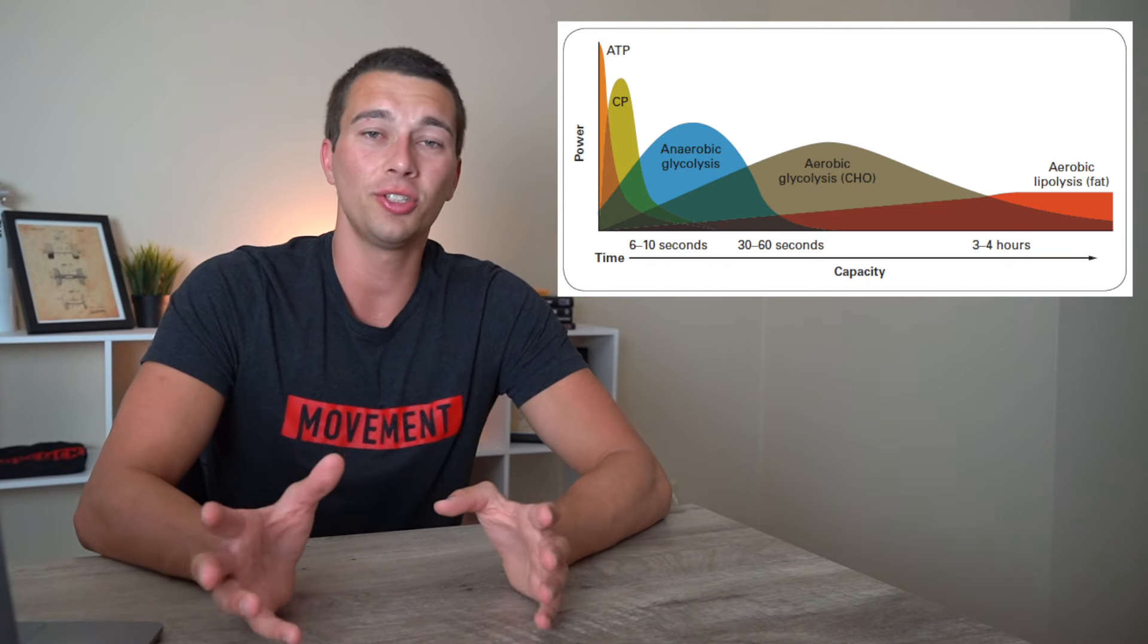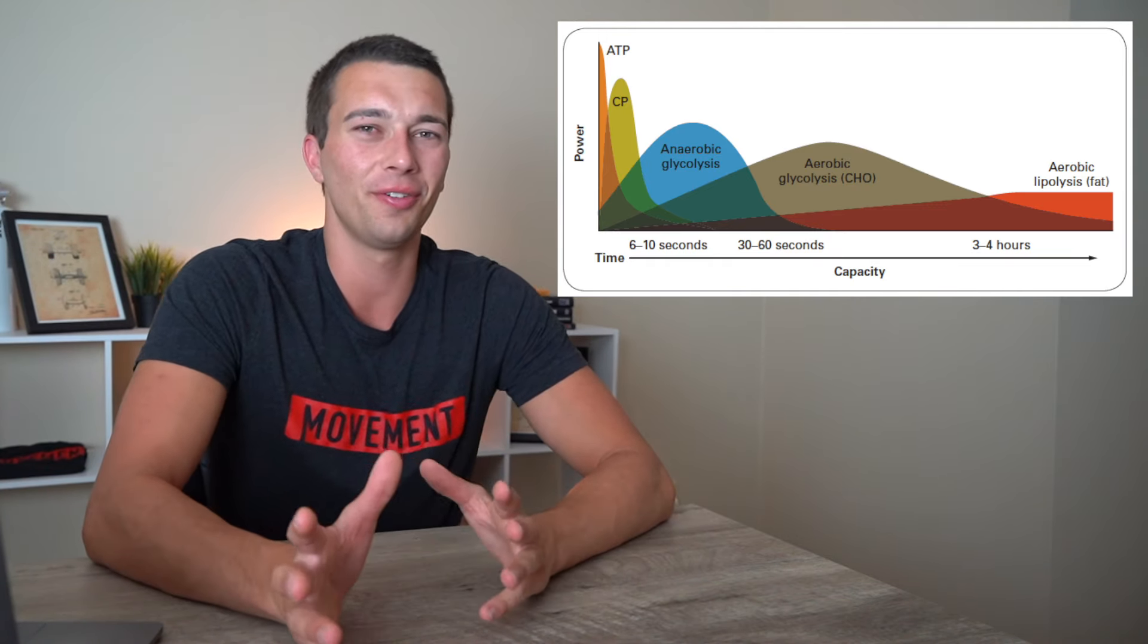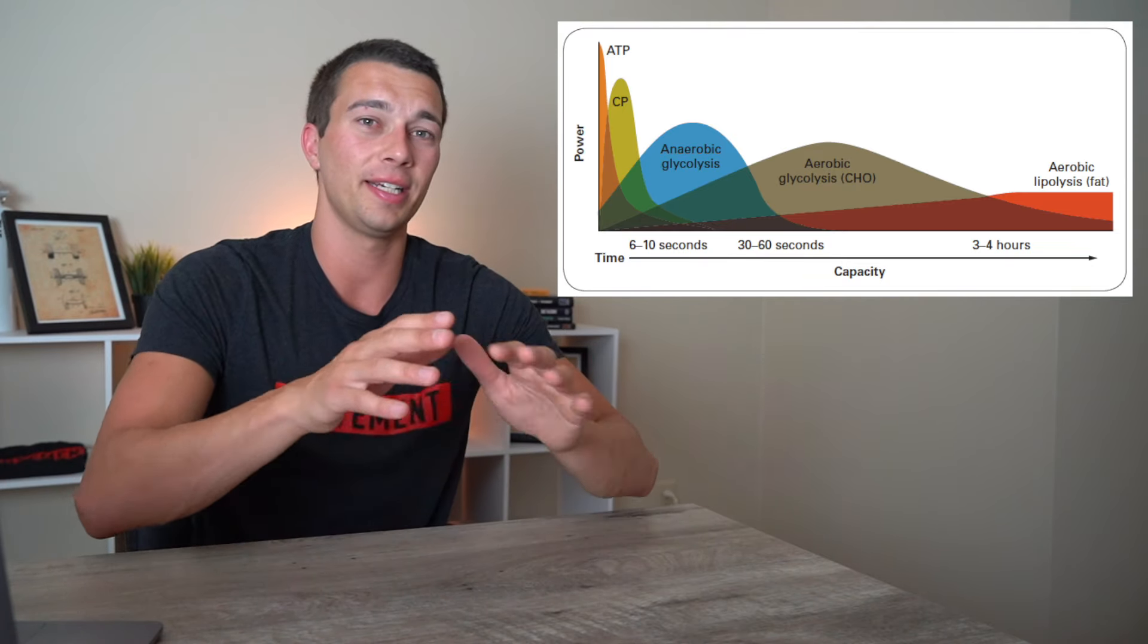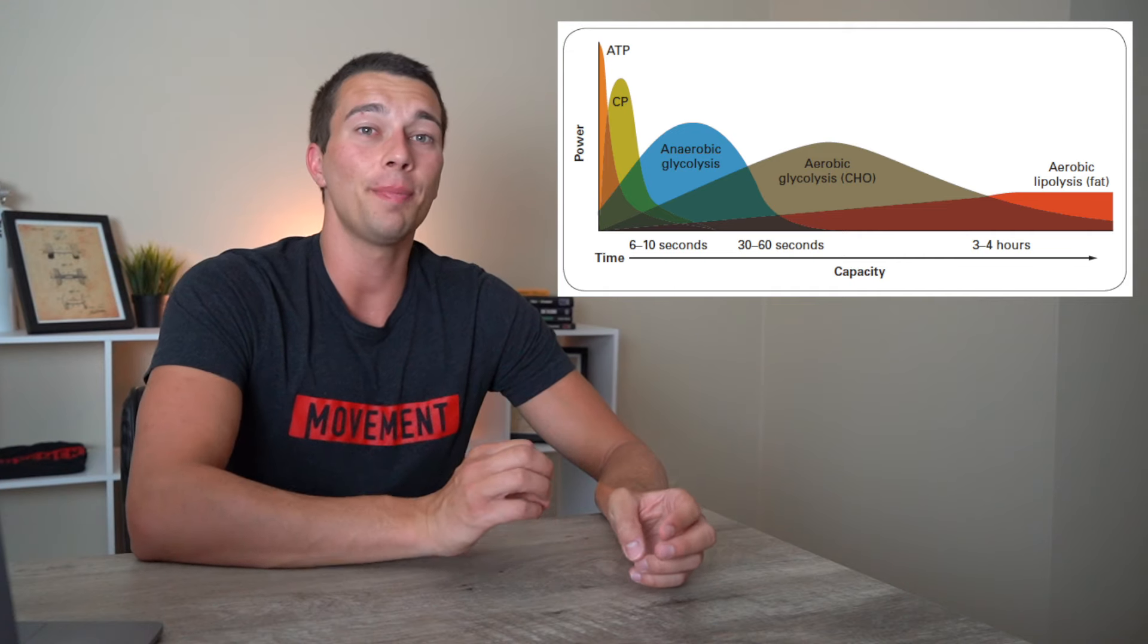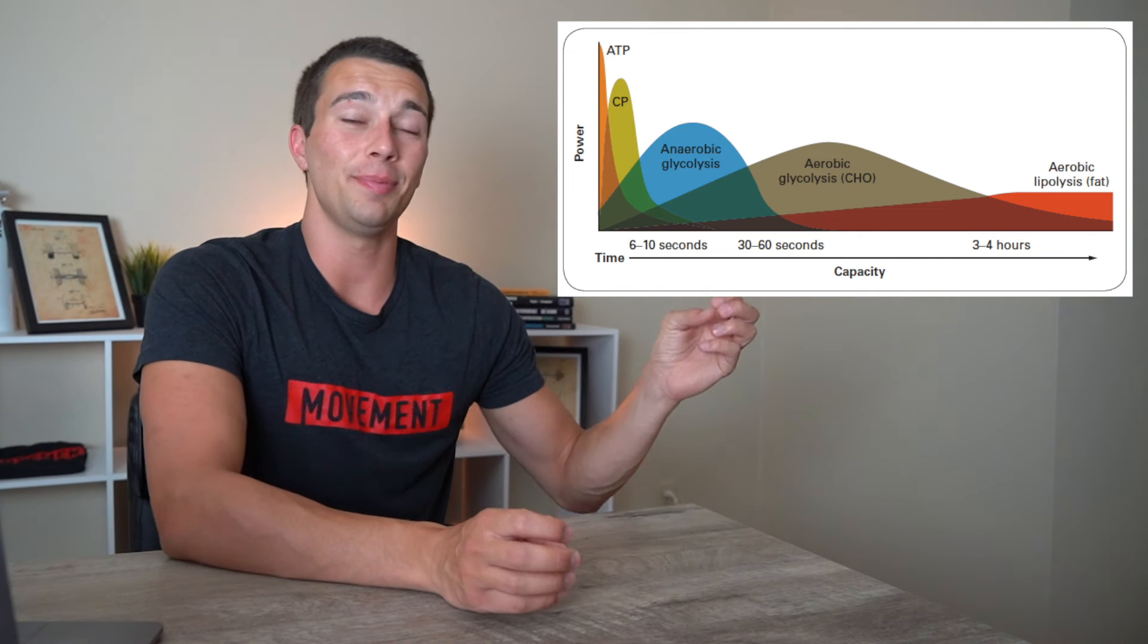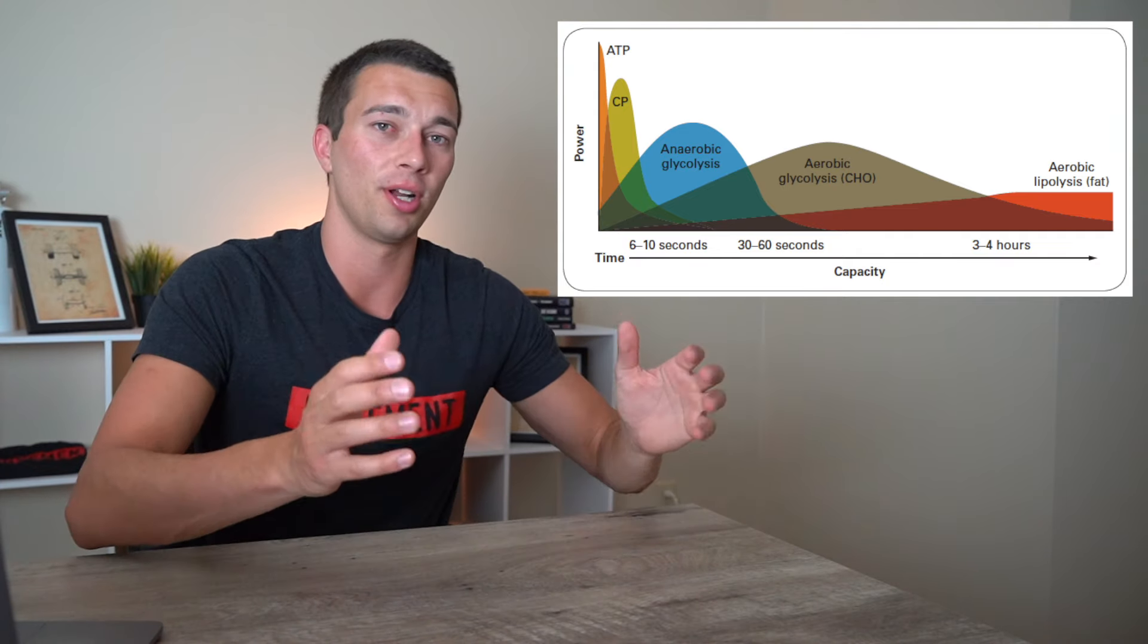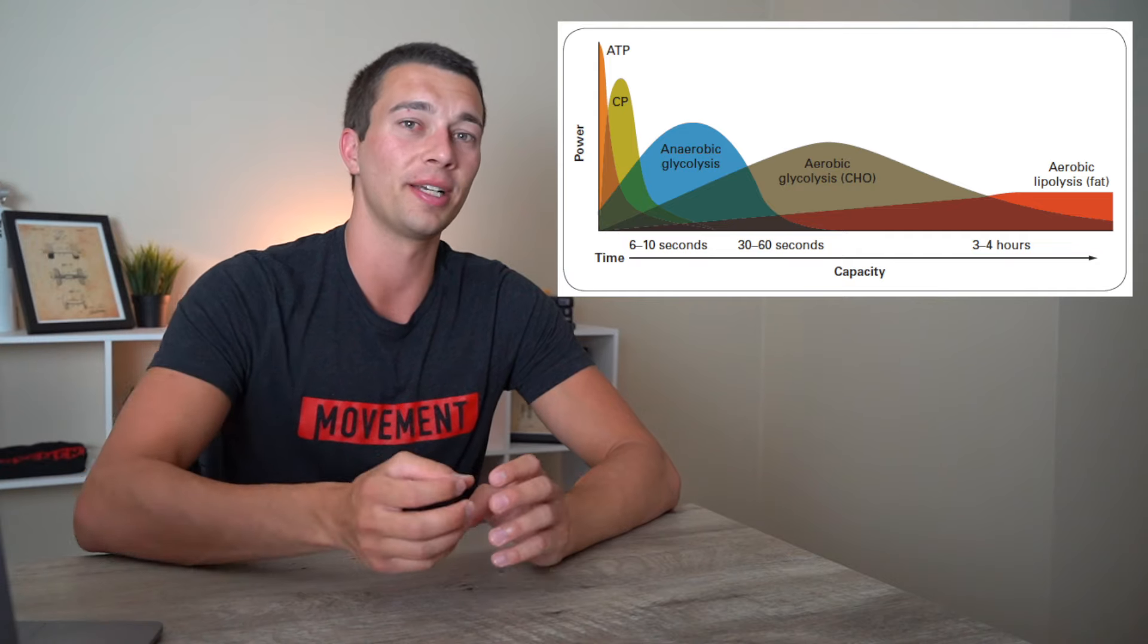So what this means, and this is oversimplified, but if it takes 100 ATP to run a 100 meter run, and again, that's very oversimplified, it takes thousands of ATP molecules but let's just say it takes 100 ATP. This means that anaerobic glycolysis might be giving you 50 or 60 of those ATP. The ATP-PC system might be contributing 30 of that 100, and then maybe we're getting a contribution of 10 or 20 from the aerobic system.